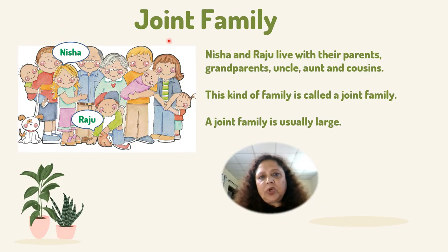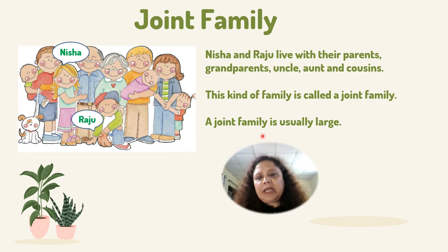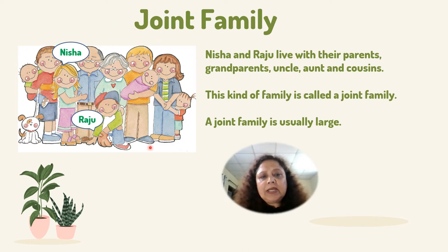Joint Family: Nisha and Raju live with their parents, grandparents, uncle, aunt and cousins. This kind of family is called a joint family. A joint family is usually large. When many relatives live together in one house, it is called a joint family.